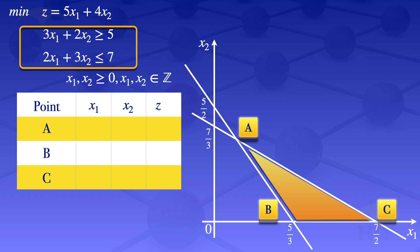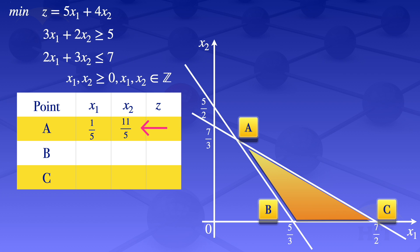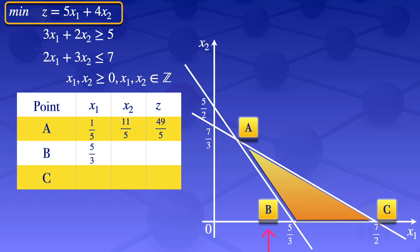To get the coordinates of point A, I solve the two constraint equations simultaneously. We get x1 equals 1 over 5 and x2 equals 11 over 5. Substituting these values into the objective function gives z equals 5 over 5 plus 4 times 11 over 5, which equals 49 over 5. At point B, x1 equals 5 over 3 and x2 equals 0. Substituting these values gives z equals 25 over 3.